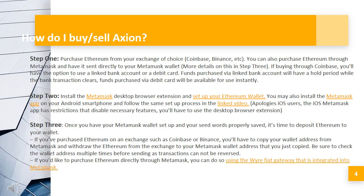Step 3: Once you have your Metamask wallet set up and your seed words properly saved, it's time to deposit Ethereum to your wallet. If you've purchased Ethereum on an exchange such as Coinbase or Binance, you'll have to copy your wallet address from Metamask and withdraw the Ethereum from the exchange to your Metamask wallet address. Be sure to check the wallet address multiple times before sending, as transactions cannot be reversed. If you'd like to purchase Ethereum directly through Metamask, you can do so using their wire fiat gateway that is integrated into Metamask.